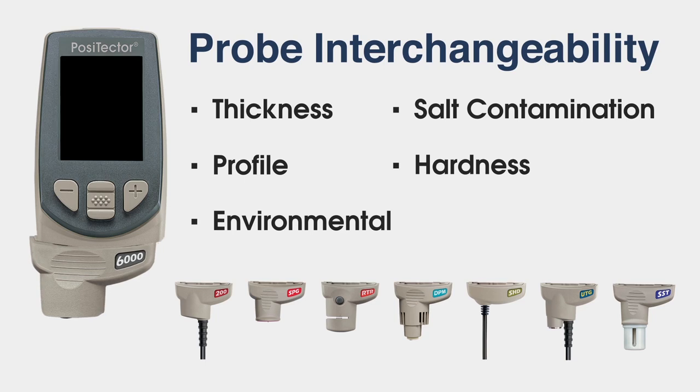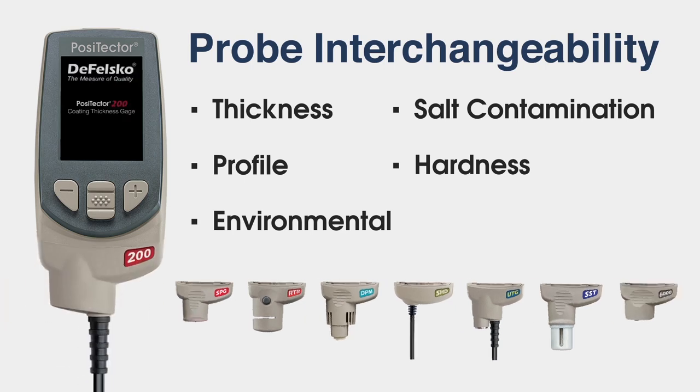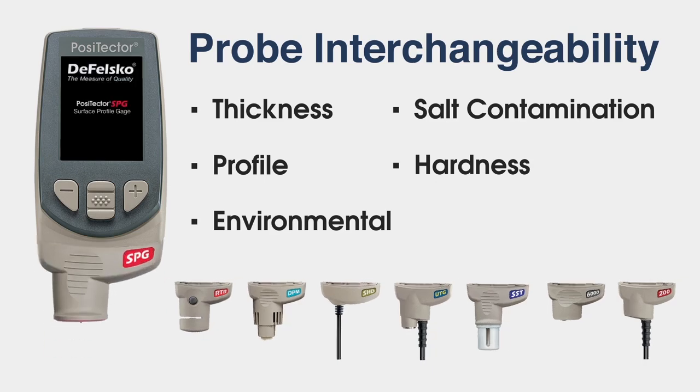The Positector 6000 FNDS probe is just one of the many interchangeable probes that fit onto a single Positector gauge body.